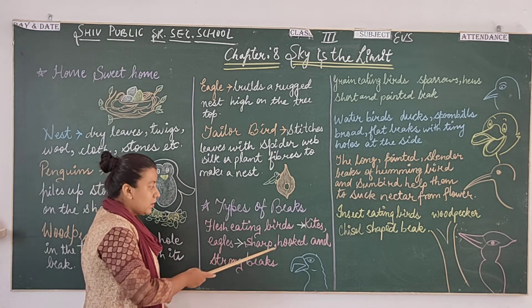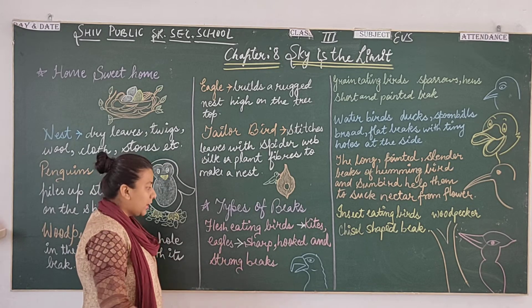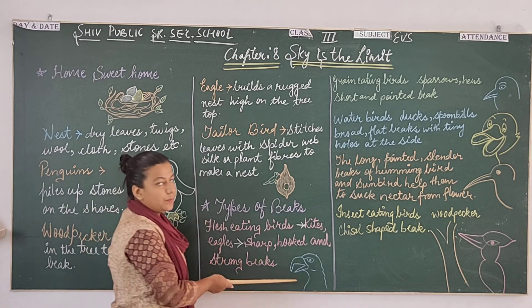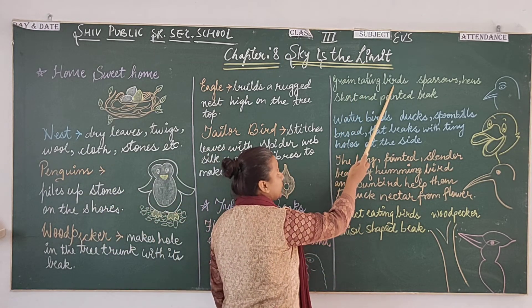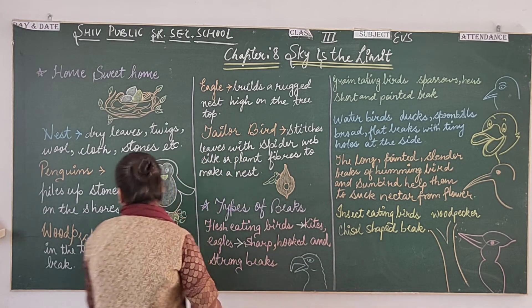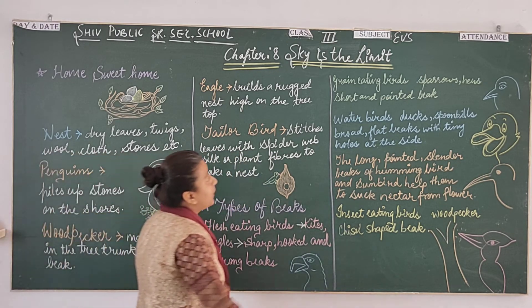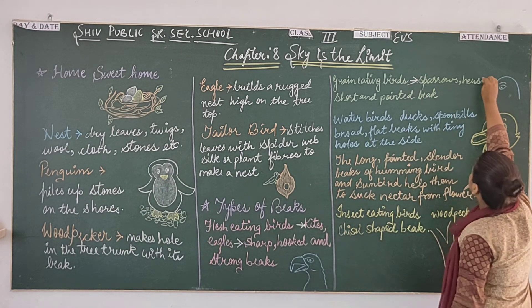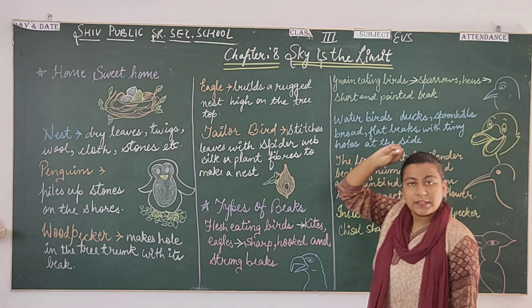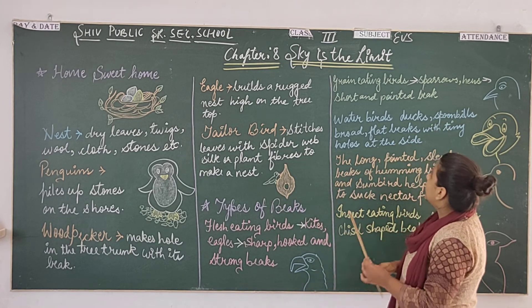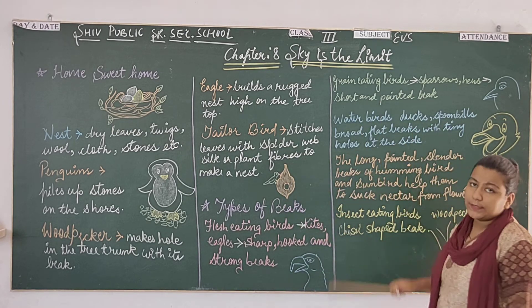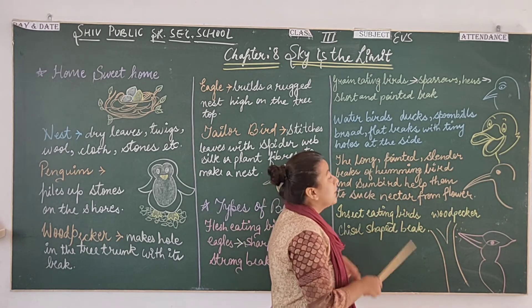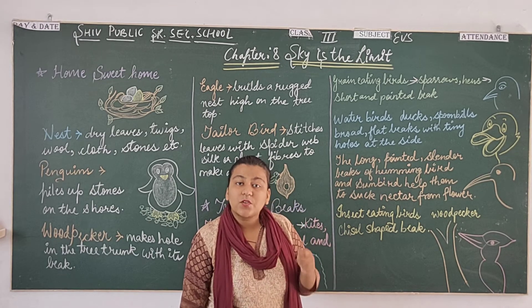Sharp beaks can be curved and strong. Next are grain-eating birds. An example of a grain-eating bird is a sparrow. Sparrows have short and pointed beaks. The small ones are pointed, as you can see.